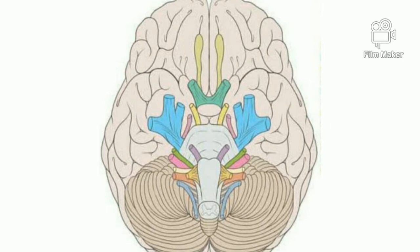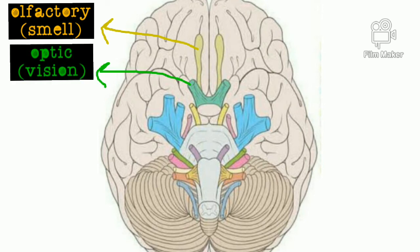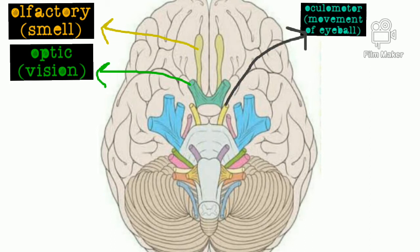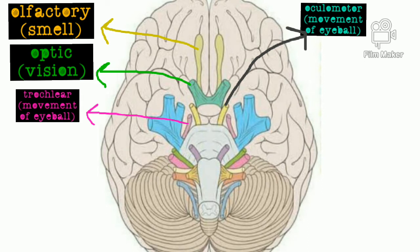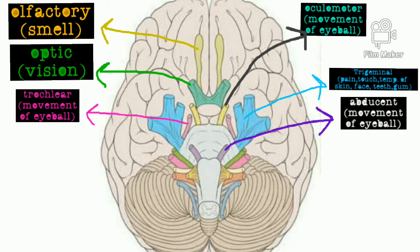Now we will label the cranial nerves on this diagram. Olfactory nerve, whose function is smell. Optic nerve, whose function is vision. Oculomotor nerve, whose function is movement of the eyeball. Trochlear nerve, whose function is also movement of the eyeball. Trigeminal nerve, whose function is pain, touch, and temperature of the skin, face, teeth, and gums.